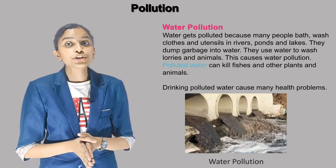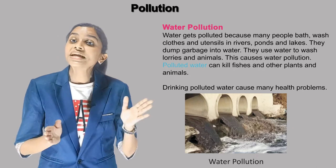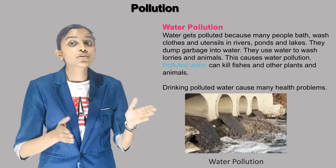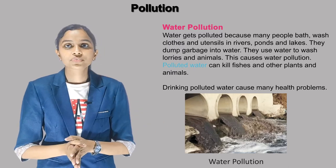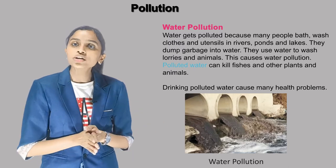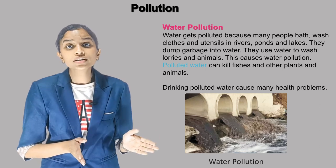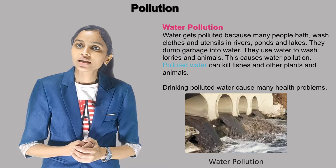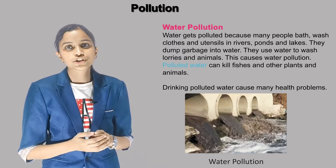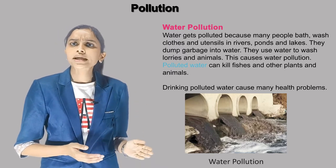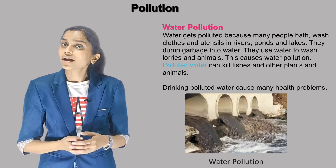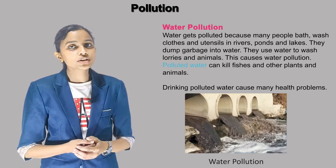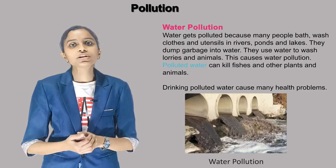Water pollution. Water gets polluted because many people bathe, wash clothes and utensils in rivers, ponds and lakes. They dump garbage into water. They use water to wash lorries and animals. This causes water pollution. Polluted water can kill fishes and other plants and animals. Drinking polluted water causes many health problems.